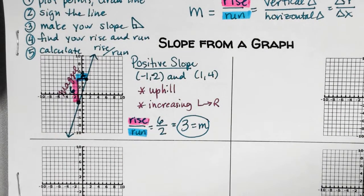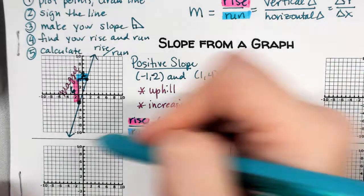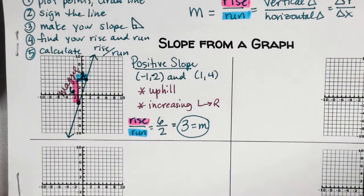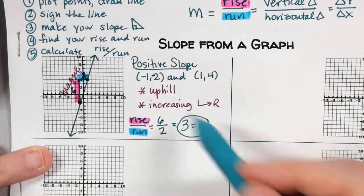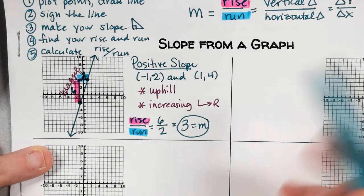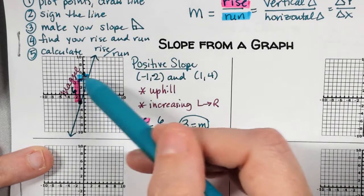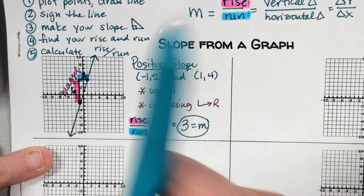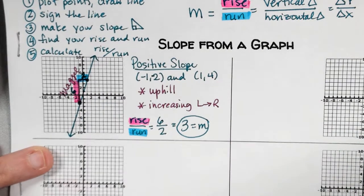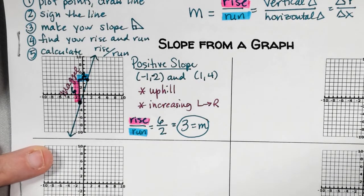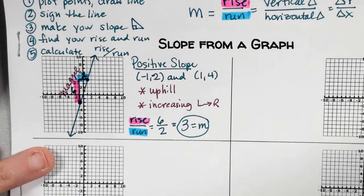My answer is three, which is my slope. That took a long time, but we're not always going to take this much time to find slope. This is like rate of change — it is rate of change, except we're doing it visually instead of with the table. I want you to practice this — just one night of rise over run, and then you can use your table.